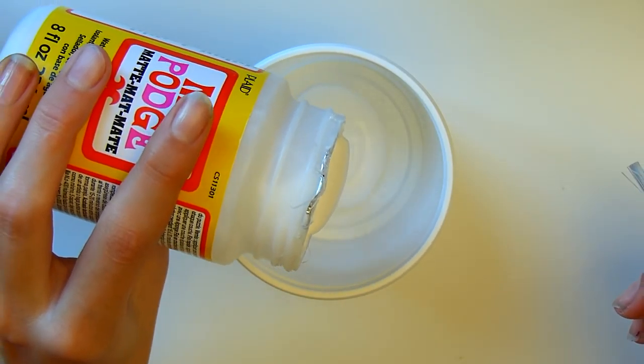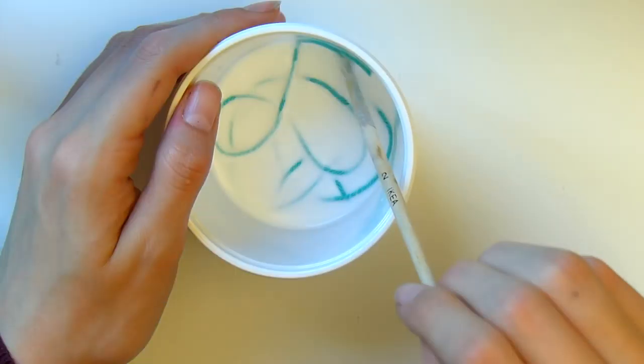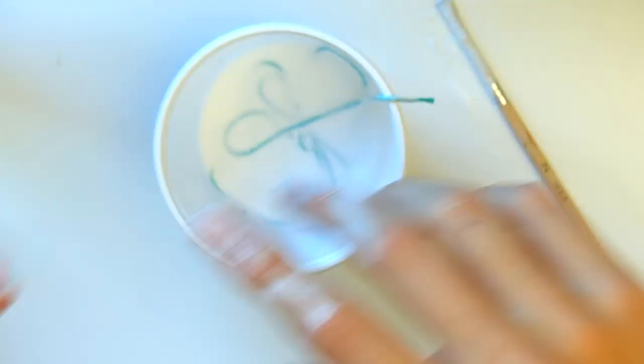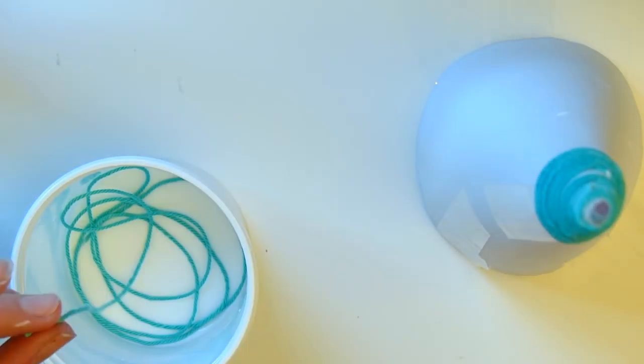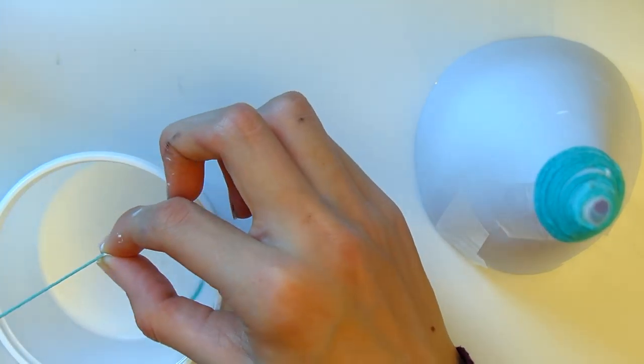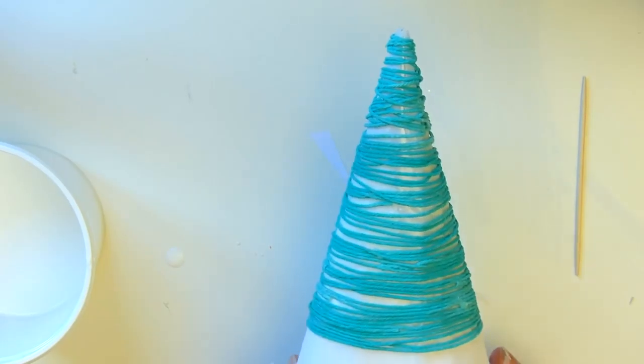Je vais mélanger de la colle liquide transparente avec un peu d'eau afin d'obtenir une texture comme du lait. Puis je trempe à l'intérieur des fils de coton vert, des petits bouts. Je viens essorer le tout et le tournicoter autour de mon cône, du haut vers le bas. Je fais ça avec plusieurs bouts de fil jusqu'à ce que mon sapin me plaise. J'attends ensuite que cela sèche.